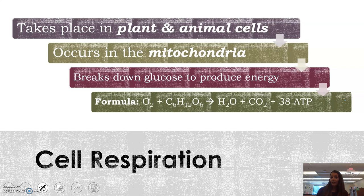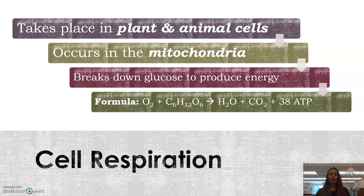Now let's get into cell respiration. We tend to focus on animal cells, but plant cells have mitochondria too, so they also can do cell respiration. This is where glucose is broken down to produce energy. The formula is similar but opposite to photosynthesis: O2 plus C6H12O6 yields water, carbon dioxide, and 38 ATP. So we're creating ATP in the cell respiration process.